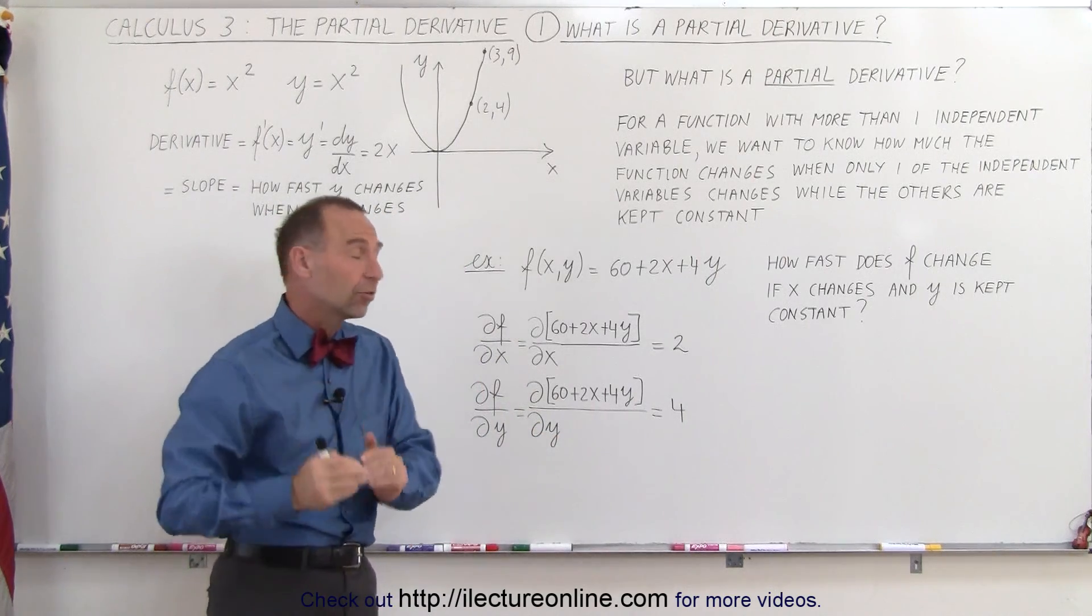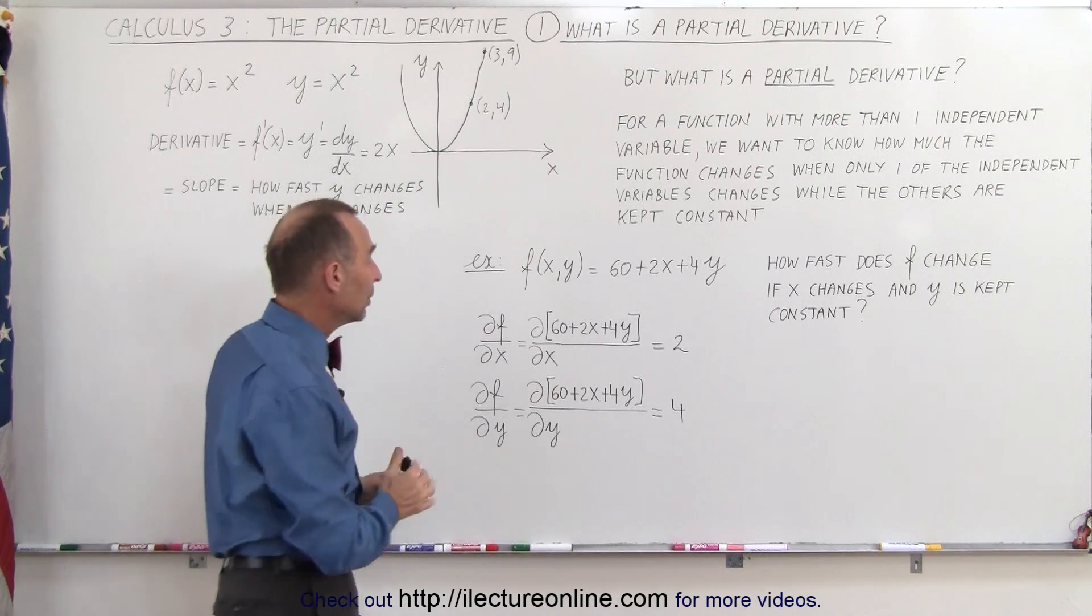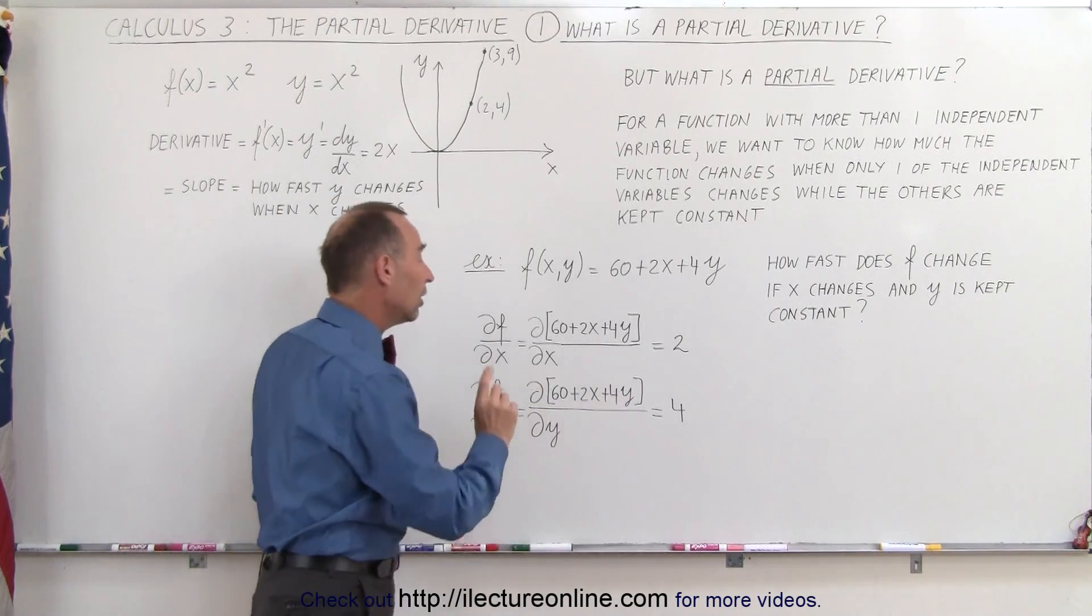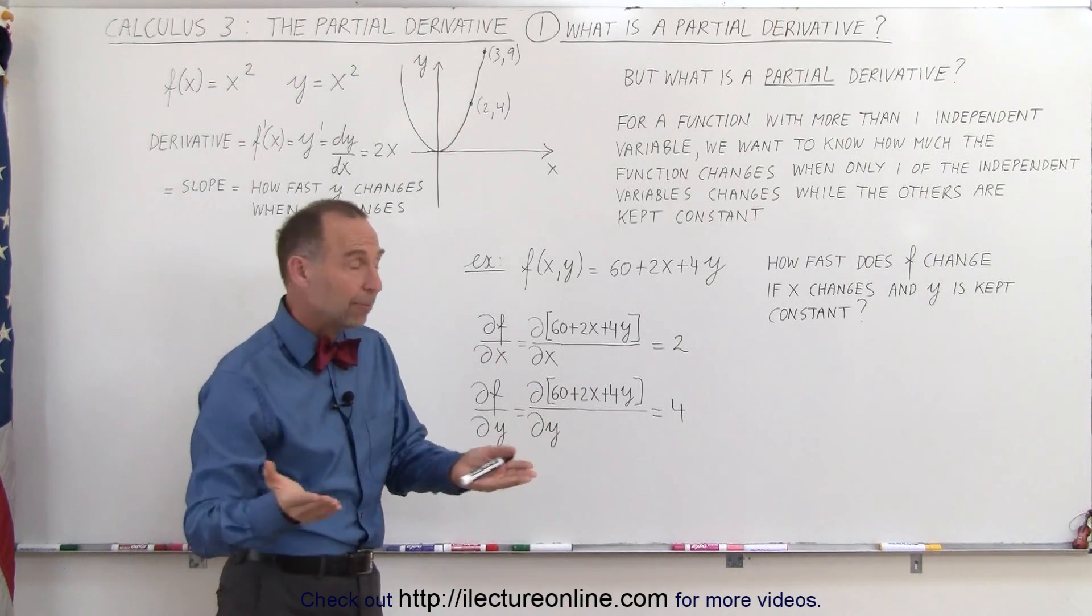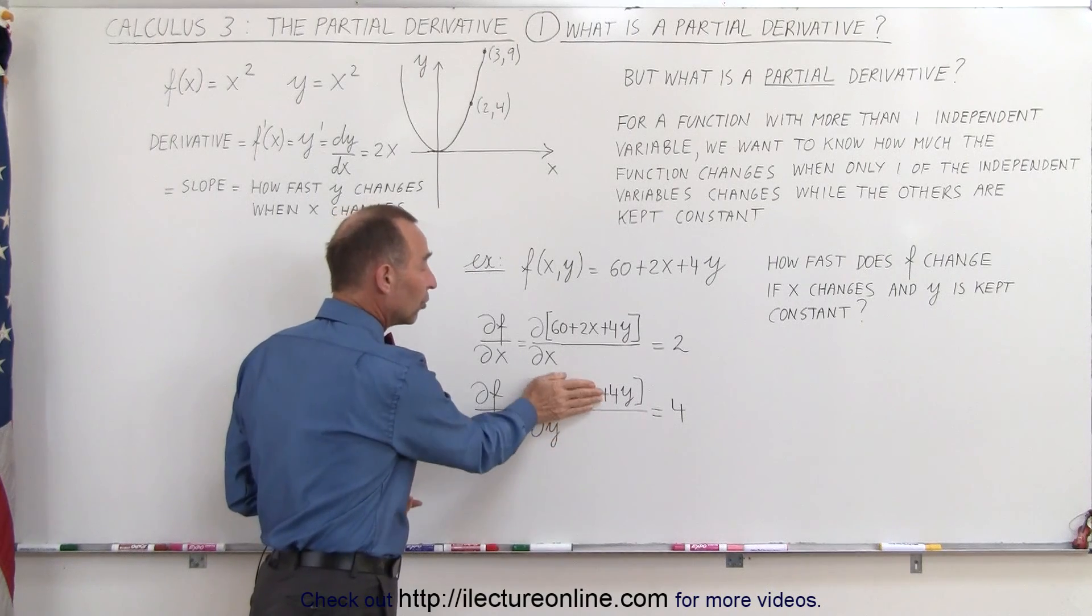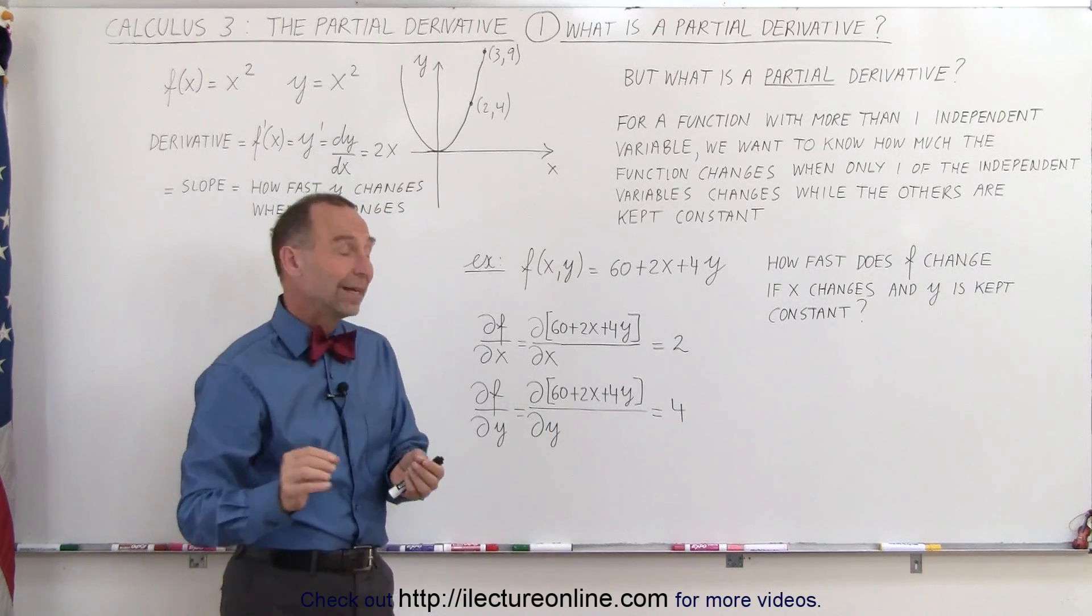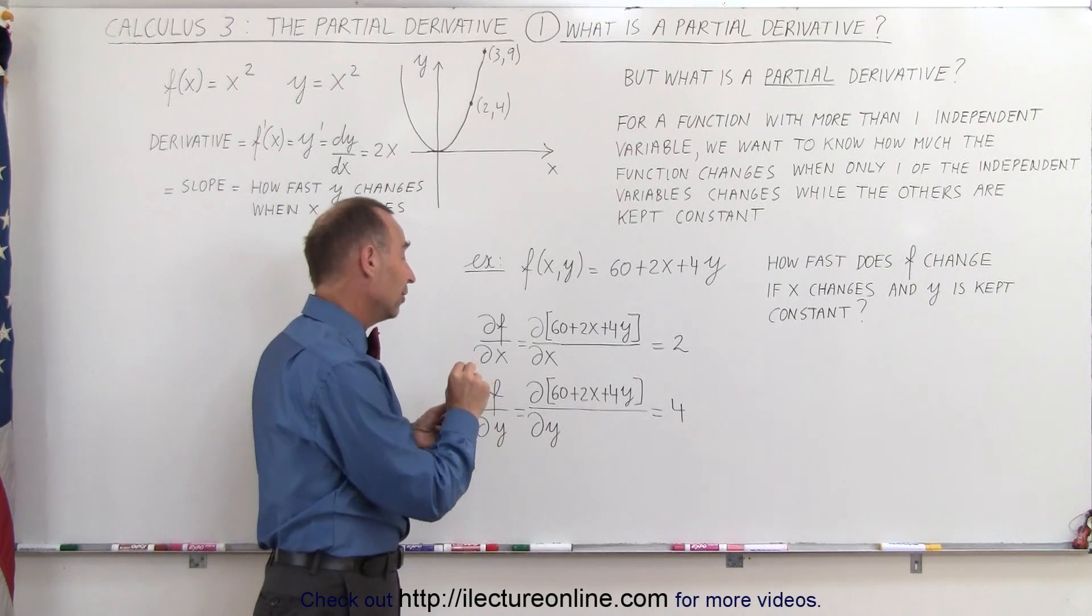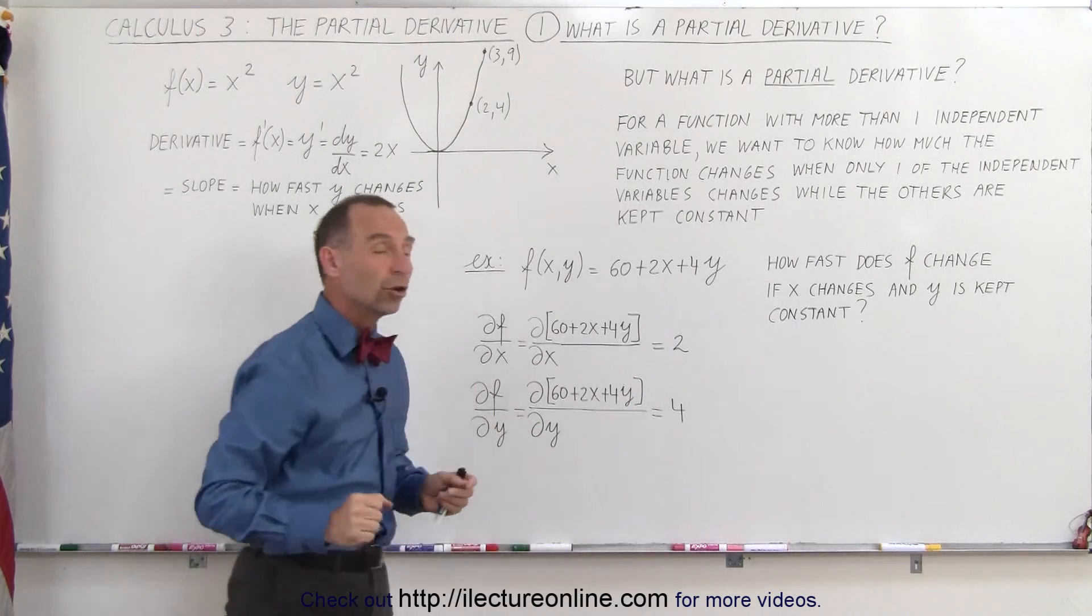What if I took the partial derivative with respect to y? In other words, I'm now going to keep x constant and allow y to change. We write it like this: we take the partial derivative of the function. Now notice that 2x becomes a constant because we kept x constant. The derivative of constants go to 0, and the derivative of 4y simply is 4. In other words, if the value of y changes by 1 unit, the function will change by 4 units.